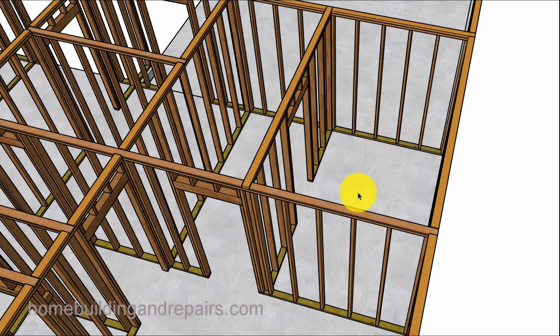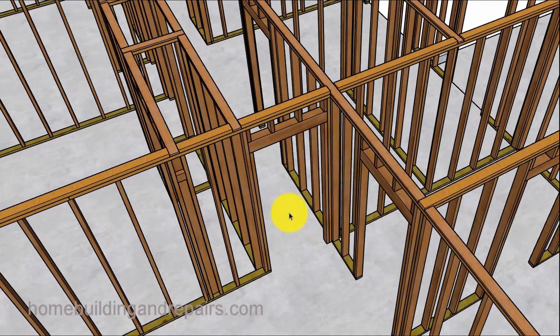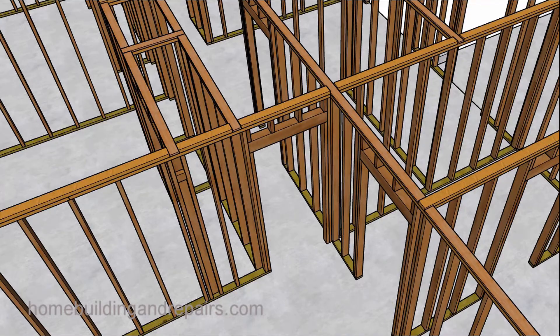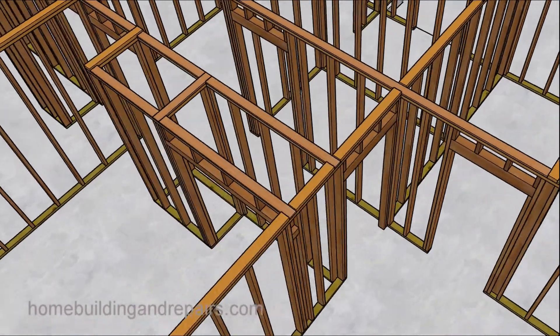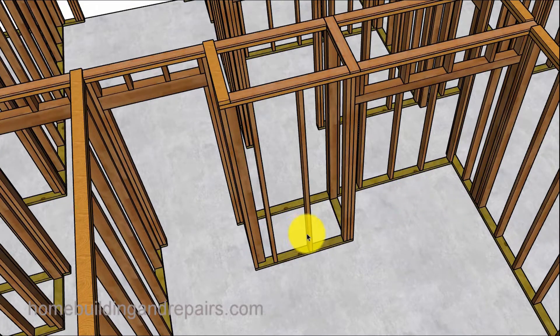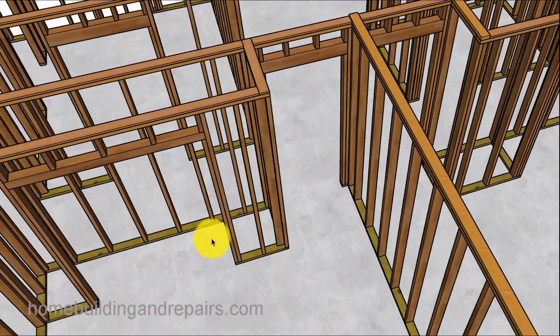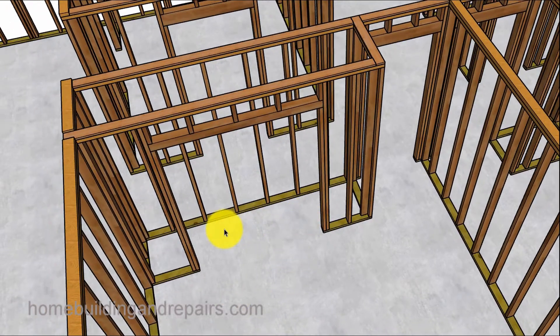Another view of the bathroom, master bathroom, and the master closet. Hallway coming into the master bedroom, entrance going into the bathroom and the closet area. The closet for one of the bedrooms, and this would be a linen closet or linen cabinet accessed from the hallway. And then the other closet for the other bedroom.